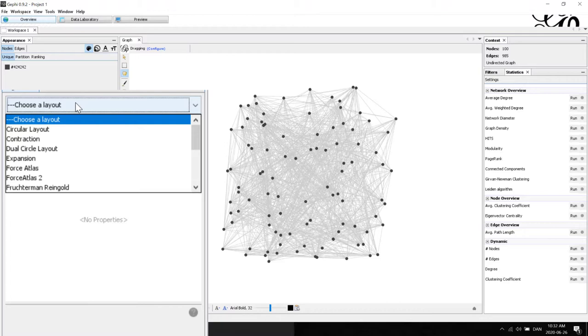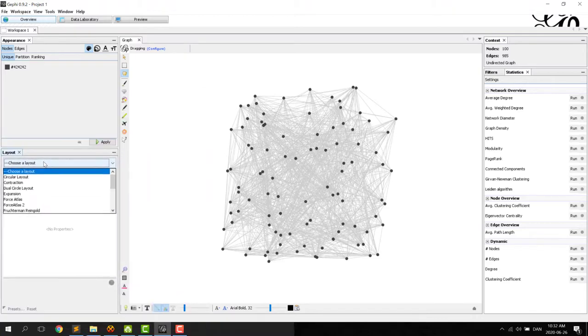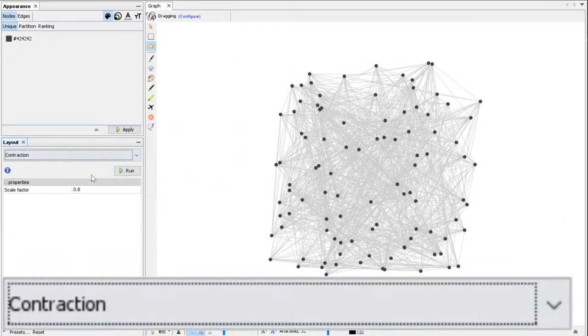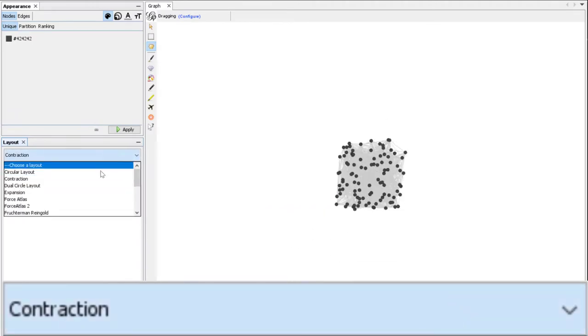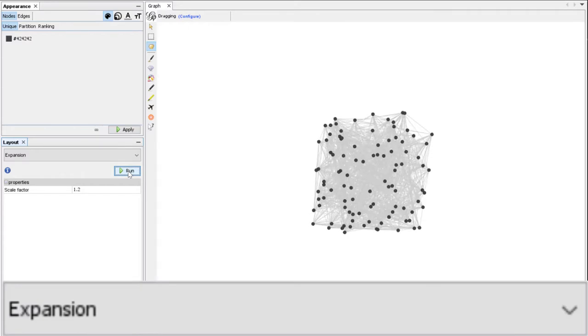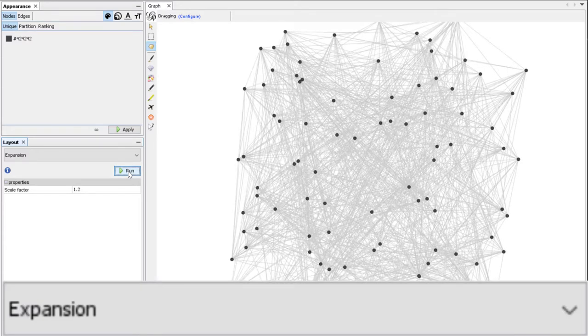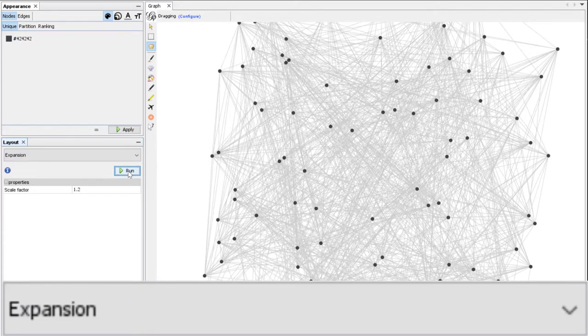Let me just show them and we can move to another type of layout after that. Contraction makes your network smaller. Expansion makes your network bigger. This is not exactly zooming, it's actually shifting the position of the nodes.